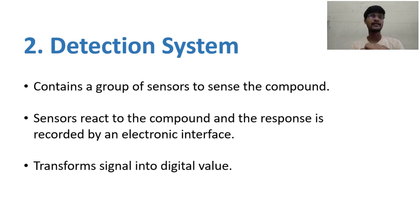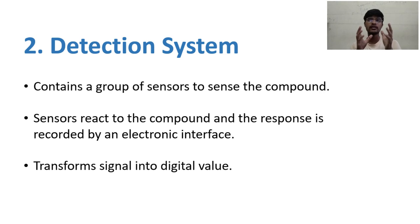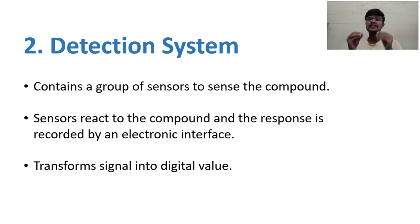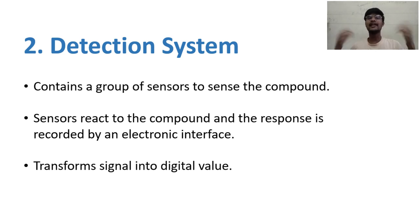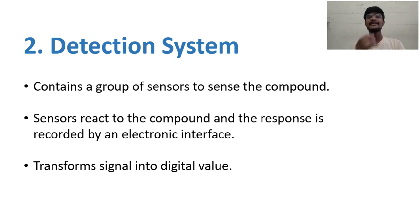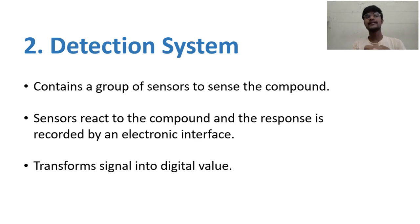The second block is the detection system — this is like the heart of the electronic nose, where detection happens. It consists of a group of sensors to sense the compound. Each sensor detects a different chemical compound, so the detection system contains an array of many sensors. The sensors react to the compound and the responses are recorded by the electronic interface. That response is converted into a signal, and a digital value is extracted from that signal, which is then sent to the computing system.